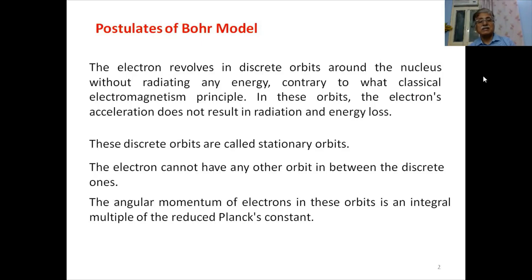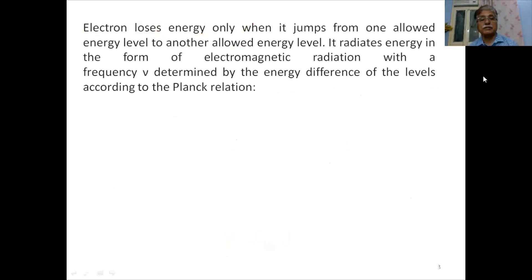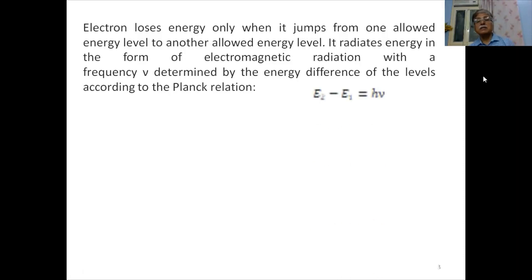The next very important postulate of Bohr's model is that the angular momentum of electrons in these orbits is an integral multiple of h-cross, or the reduced Planck's constant. If m is the mass of the electron, v is the velocity, and r is the radius of the orbit, then angular momentum mvr equals nħ. An electron loses energy only when it jumps from one allowed energy level to another, radiating electromagnetic radiation with frequency ν.